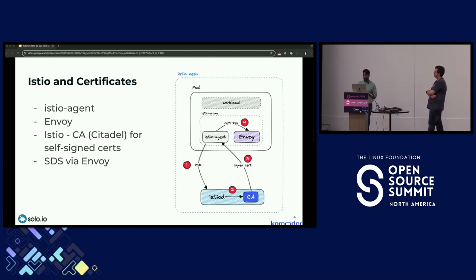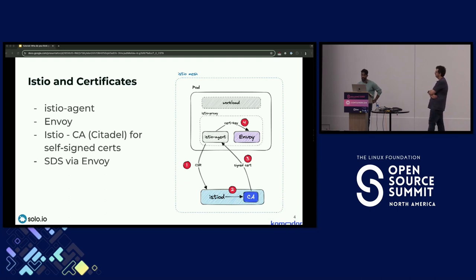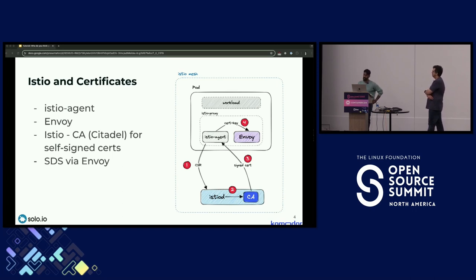In Istiod, there's a process called Citadel that acts as the certificate authority — it signs and issues all certificates to your workloads, acting as the original truster. The second component is the Istio agent, a process running in the sidecar proxy, responsible for communicating with Citadel to request the certificate for the workload and making the cert and key available to the Envoy proxy through the Secret Discovery Service, or SDS.